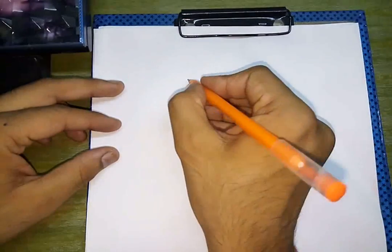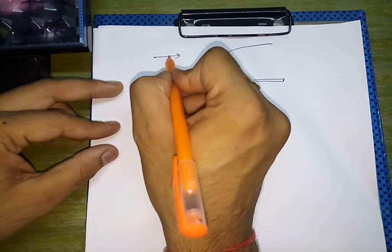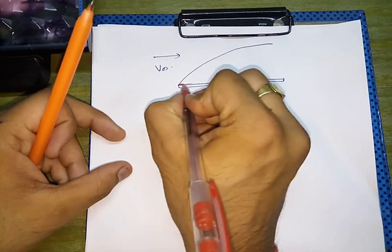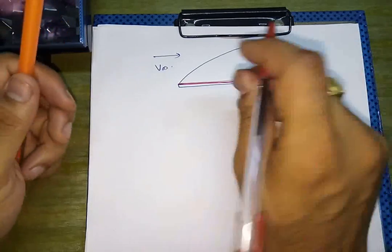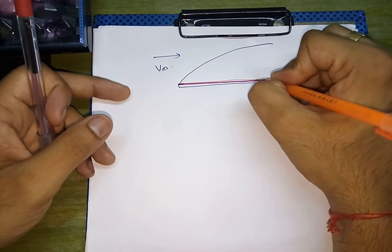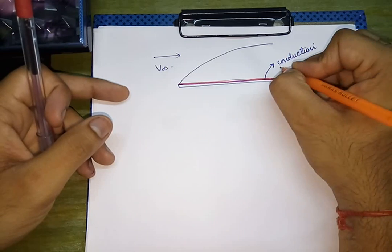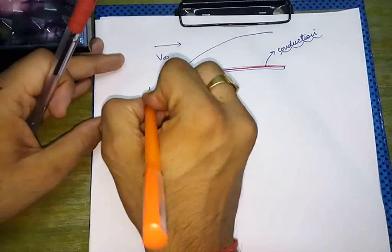Welcome to MechZone. In the last lecture we discussed various points on convection. Drawing the diagram again — this is the flat plate over which flow of a fluid takes place at a velocity v-infinite. The layer just in contact with this flat plate will be the stagnant layer of fluid. An important point is that heat transfer from the stagnant layer to the fluid layers above it will be by the mode of conduction.